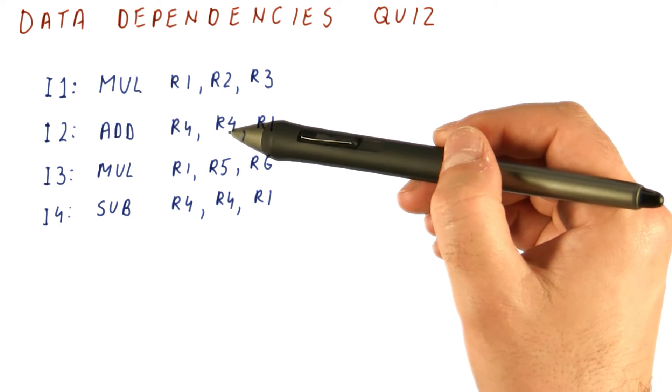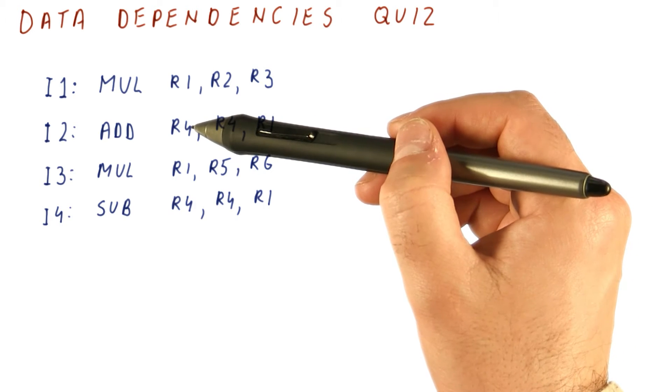Instruction two takes R4 and R1, adds them up, and puts the result in R4.